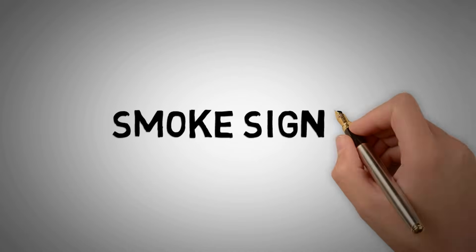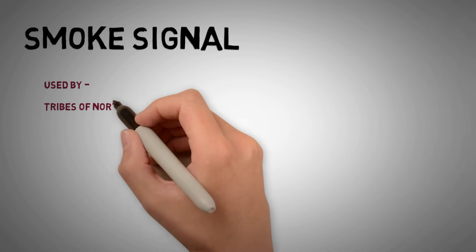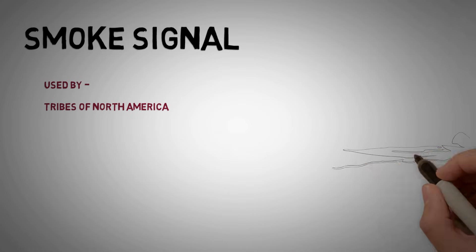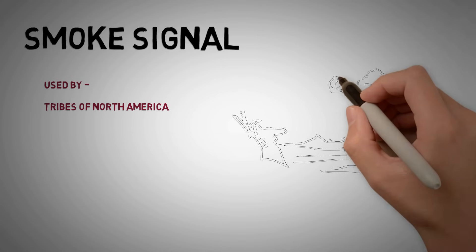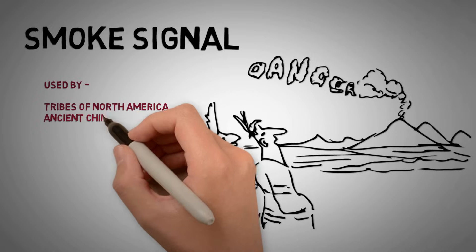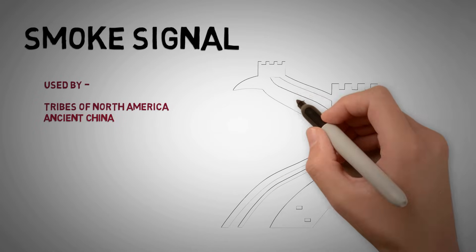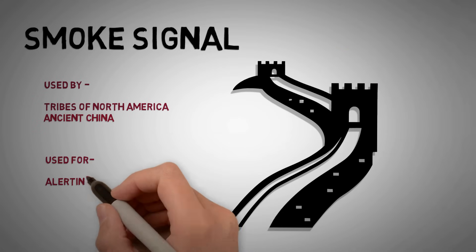Smoke signal. This was the first long-distance communication. It was used in Northern America where each tribe has its own signaling system. A smoke from top of the hill signified danger. Smoke signal was also used in ancient China. The soldiers stationed at the Great Wall would alert for danger using smoke signal from tower to tower.